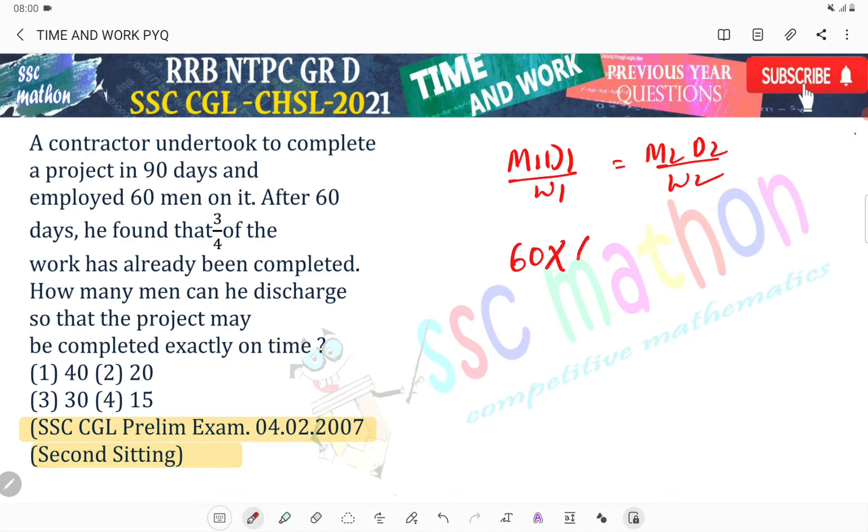M1 is 60 men, D1 is 60 days, and W1 is 3 by 4 work completed. For D2, 90 days total minus 60 days worked equals 30 days remaining. W2 is 1 by 4, the remaining work.